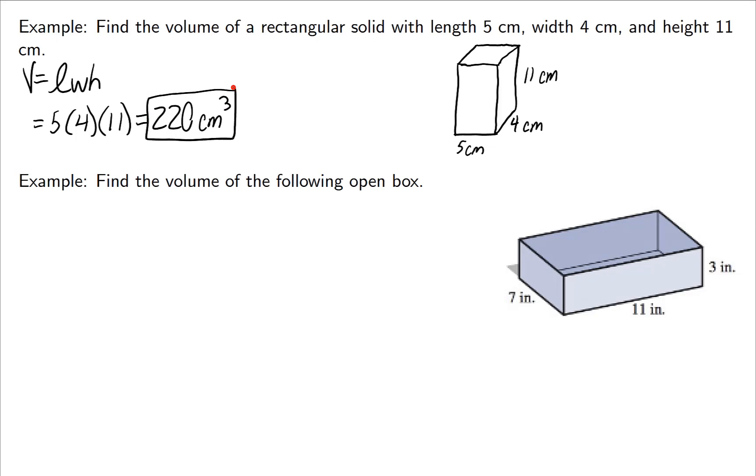Find the volume of the following open top box. Remember that open top and closed top boxes make no difference when it comes to volume. It's still just length times width times height. So I get 7 times 11 times 3, and I get 231 inches cubed.